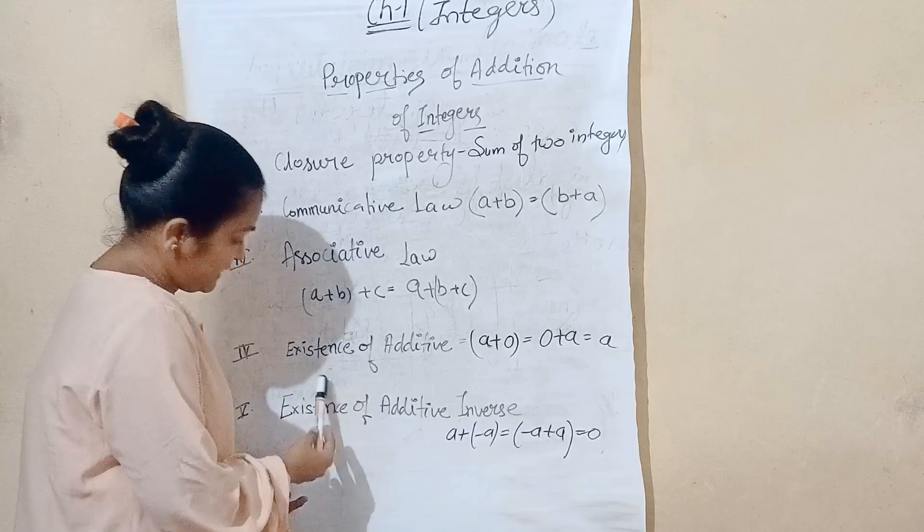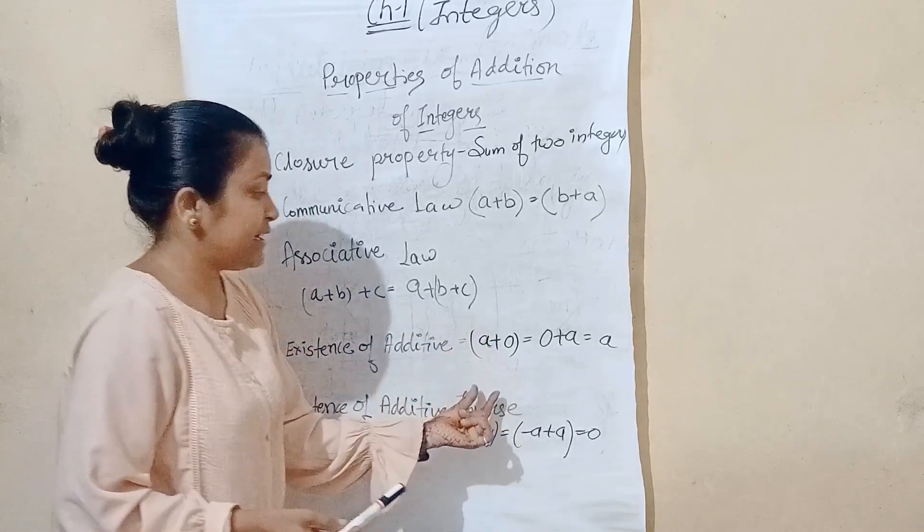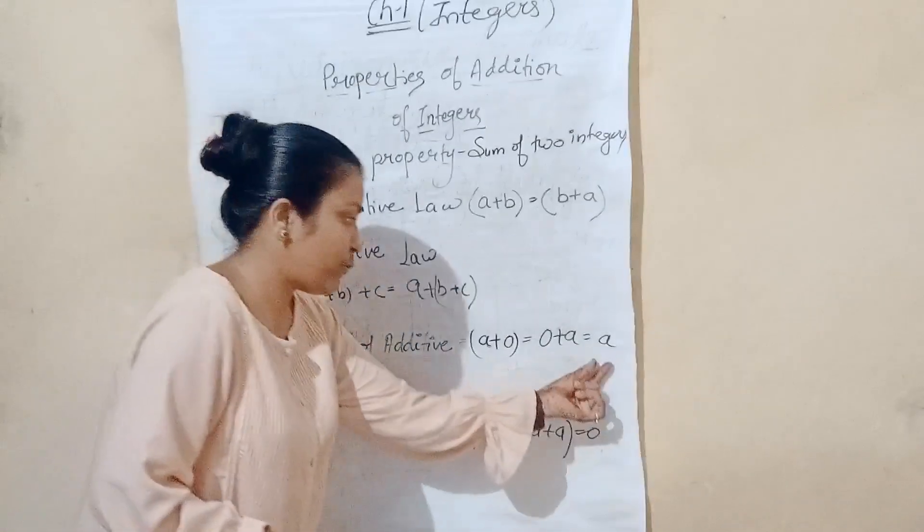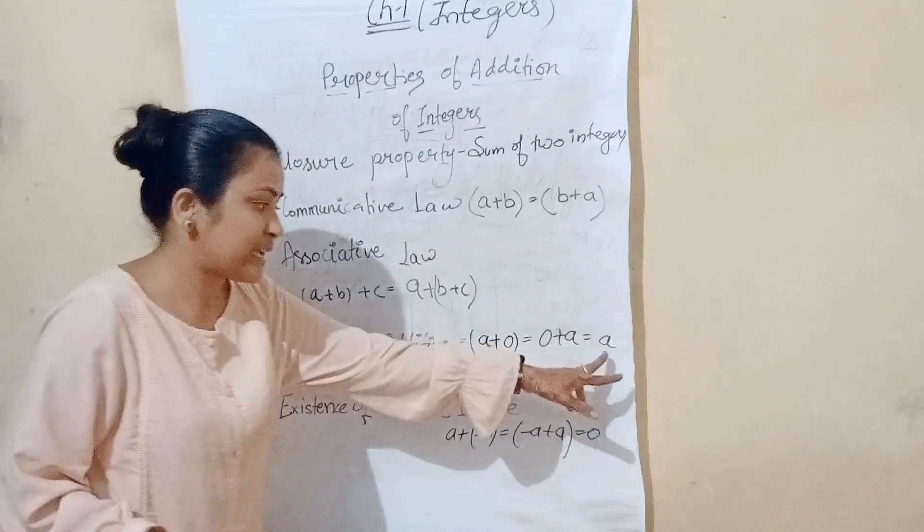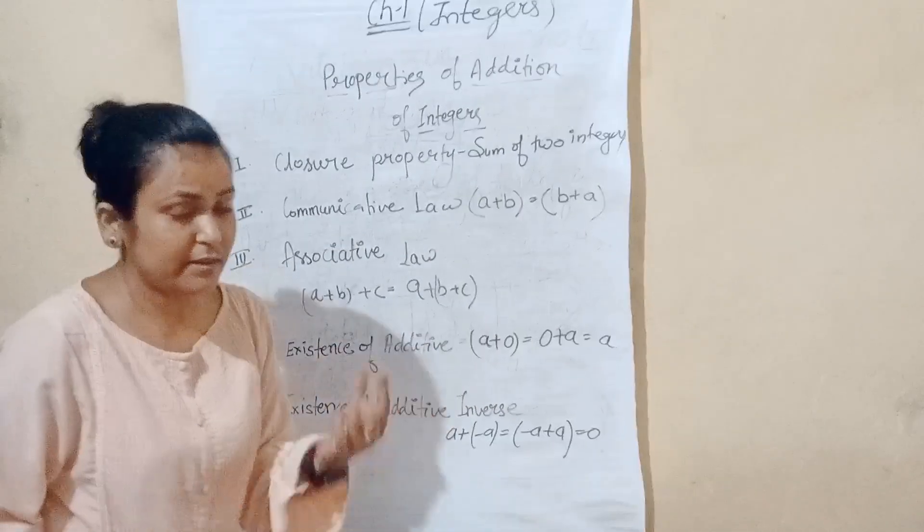Next, step 4. Existence of additive identity. If there is one integer which will add with zero, then what will happen? It will be equal to A. If we add zero to a number, we will get that digit.